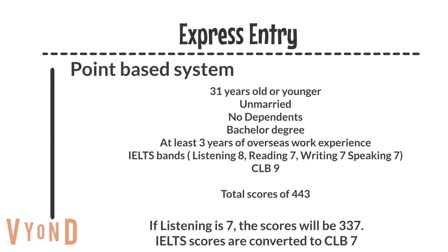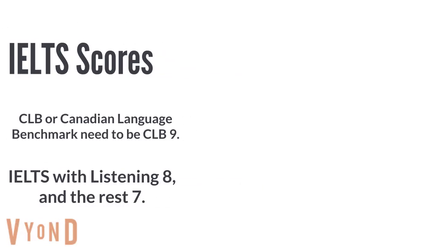For example, if their IELTS listening score were only seven — recall their IELTS band score was seven overall, with an eight in listening and sevens in reading, writing, and speaking — if the listening were also seven, then the total points would drop to 337. So it drops from 443 to 337, and this candidate's application for express entry would not be selected because the points score is too low. You can see that your IELTS really is very important — you must get that band 7 with a listening band 8. You can pretty much double your points for language by just having that band 7.